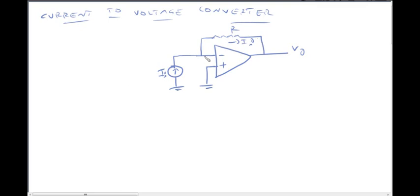Current here is I_a. This is node A and node B. B is connected to ground, so V_b equals zero.